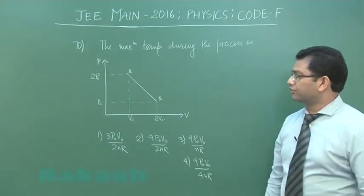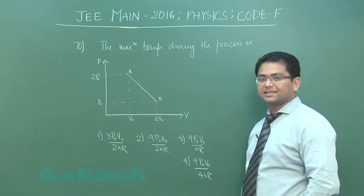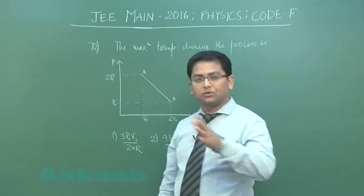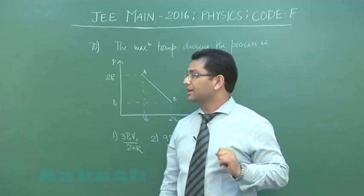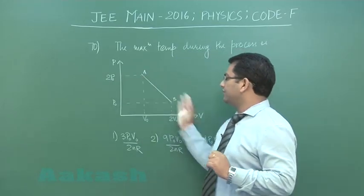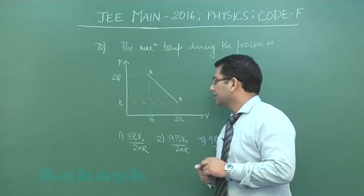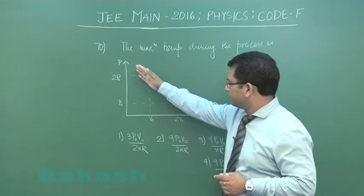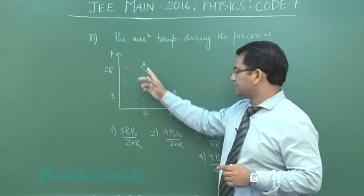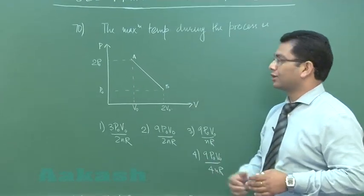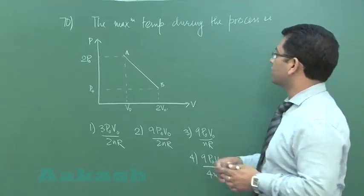Question number 70 from kinetic theory of gas. A bit of calculation is involved, but I don't say that the question is very difficult. You could see the PV diagram of the gas and the variation is linear in this way. Initial pressure and the final pressure as well as the volume is given.